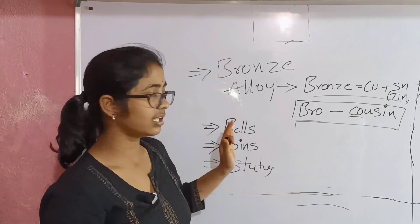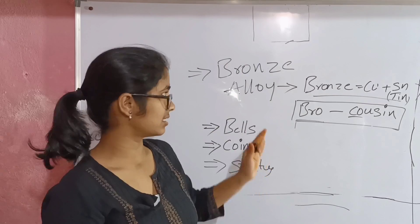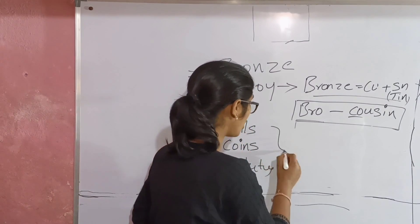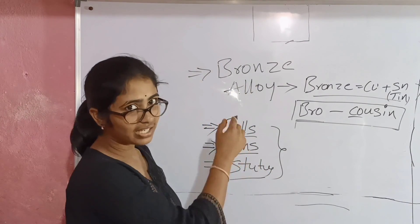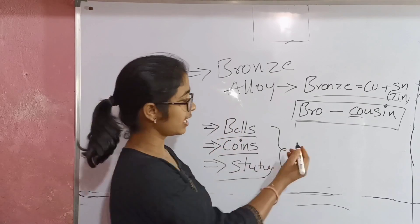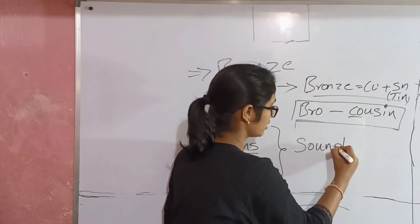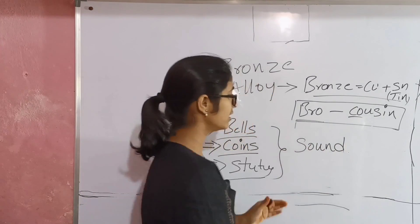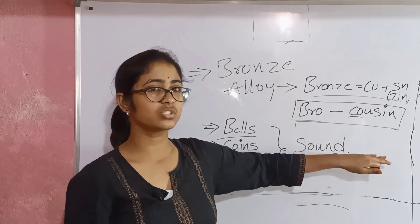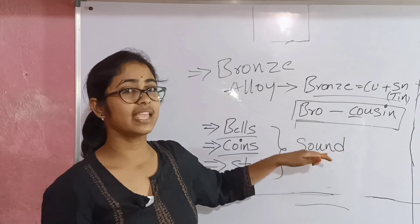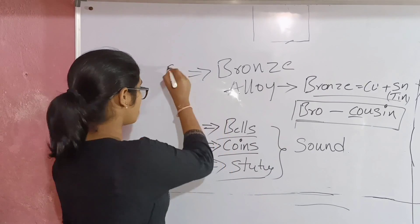Bronze is also used in bells. The common point is sound — in wheat bells it has an echo sound. If you strike it a little bit, you will find an echo sound. This is about bronze.